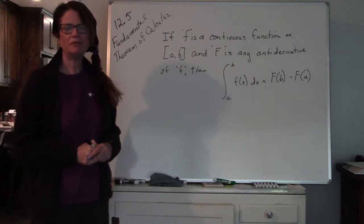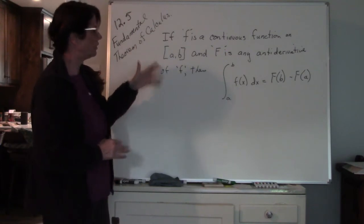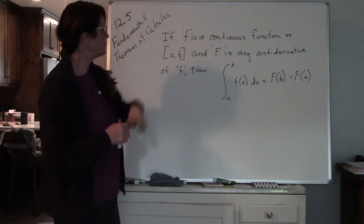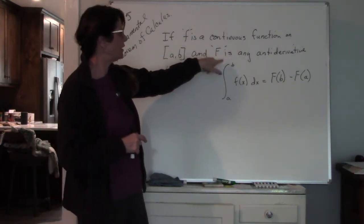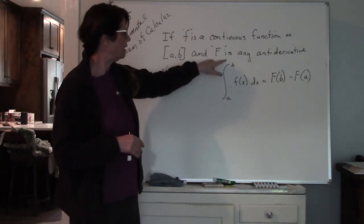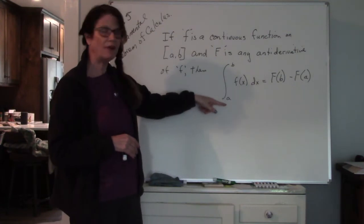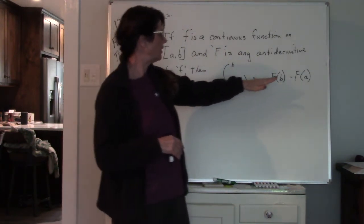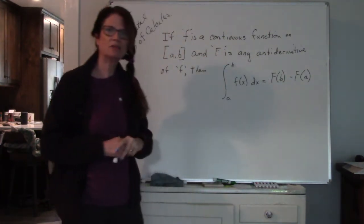Alright, so now we are at 12.5. So 12.5 is the Fundamental Theorem of Calculus. What I've written up here is the actual theorem. The theorem says if lowercase f is a continuous function between a and b, including a and b, and capital F is any antiderivative of lowercase f, then when you have an integral between a and b, your antiderivative is going to be the antiderivative when you plug b in, minus the antiderivative when you plug a in.